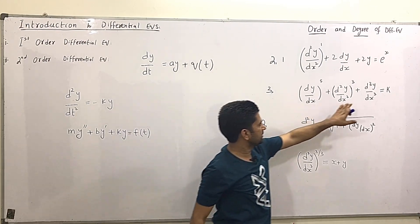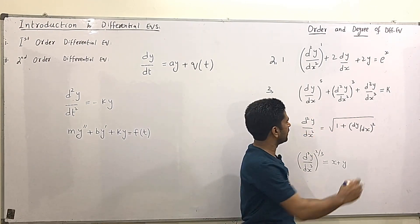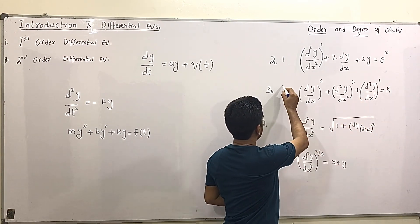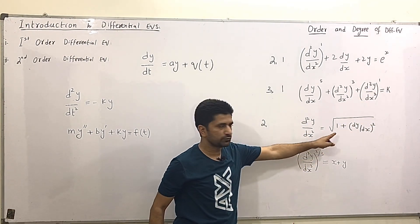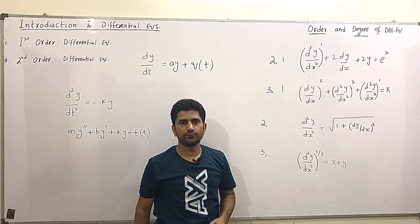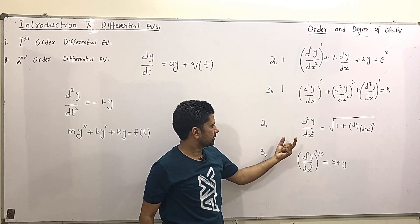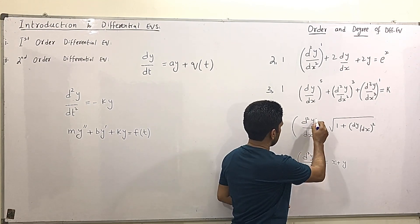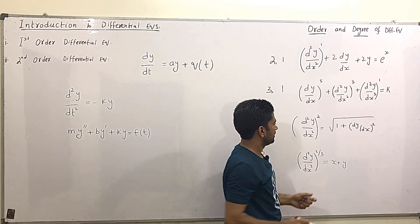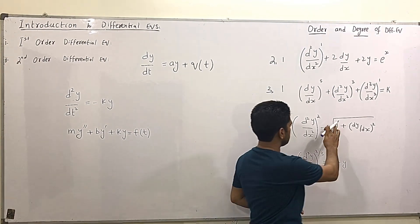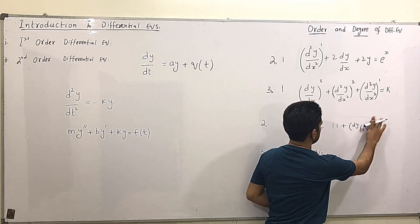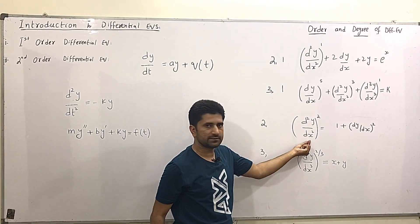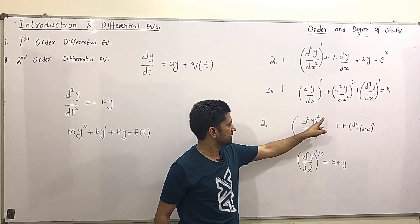And in this the highest derivative is third and its degree is 1. Similarly here we have 1. But here we have square root. So first we are going to remove the square root. So I take squaring on both the sides. When I take square on right hand side this square root will be cancel out. And I have this form. The highest derivative is this. And its degree is 2.